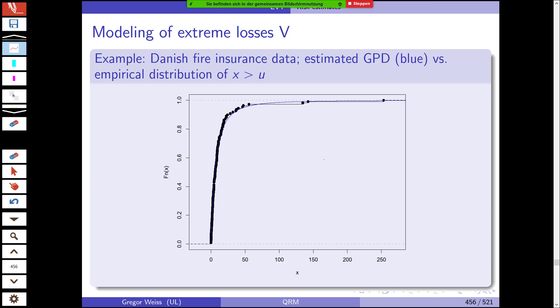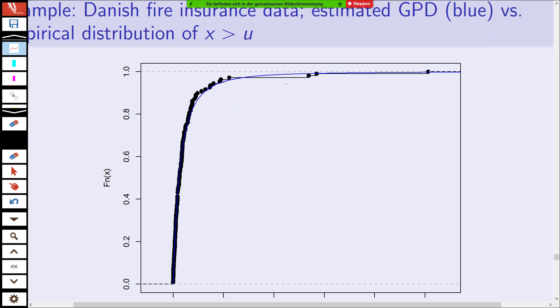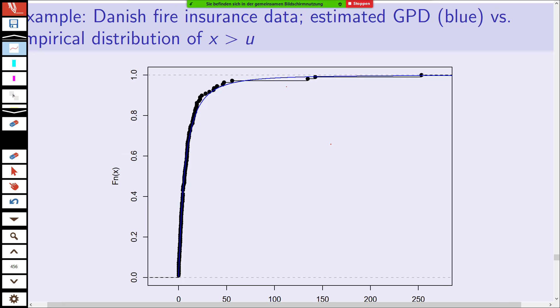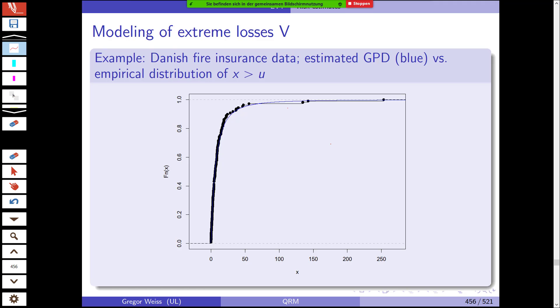This is the estimated distribution in blue versus the empirical distribution of those excess losses. The empirical distribution is a stepwise function. The main takeaway here is that it's actually a pretty good fit. The blue line is very close to the empirical data. This gives you some indication that the assumptions of the Pickands-Balkema-de Haan theorem are fulfilled, and that the excess loss data do actually follow a generalized Pareto distribution.